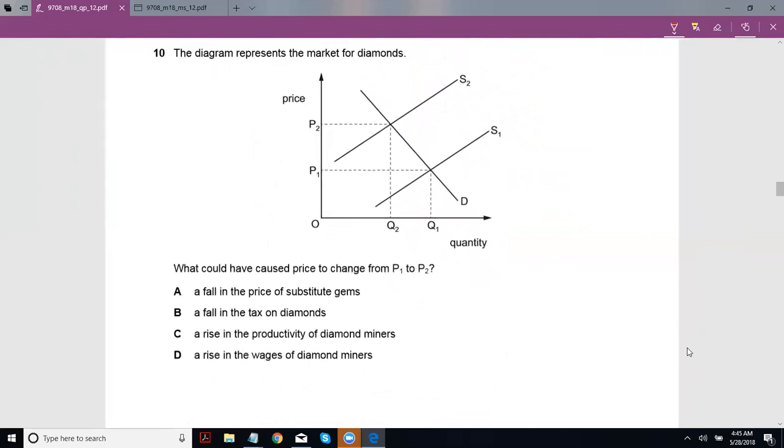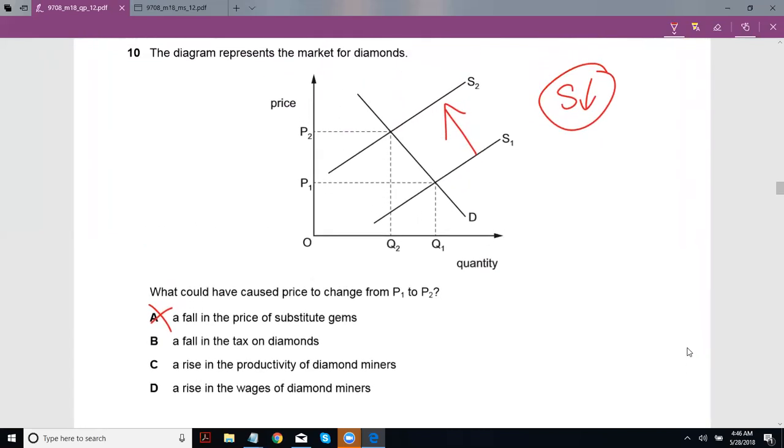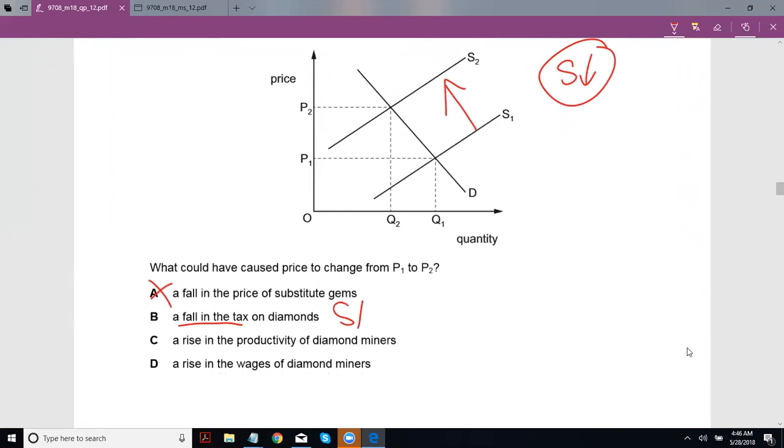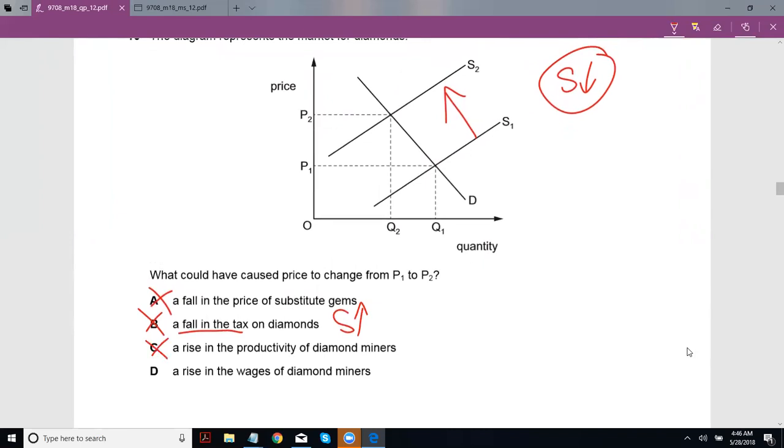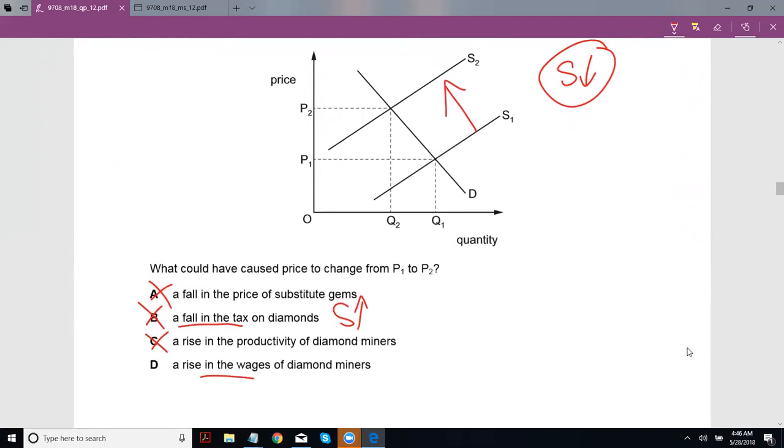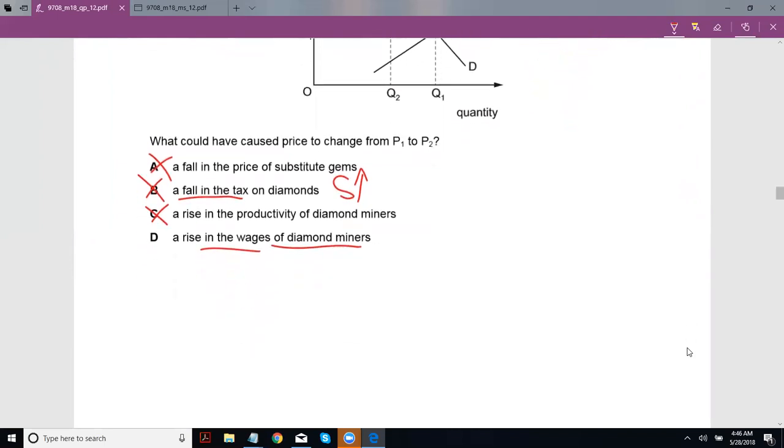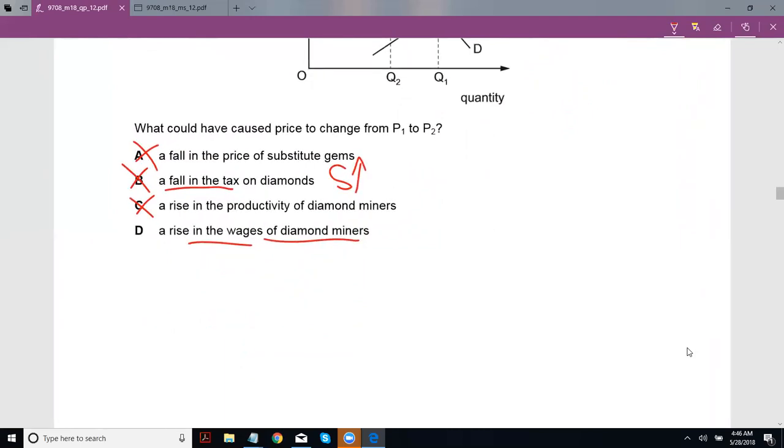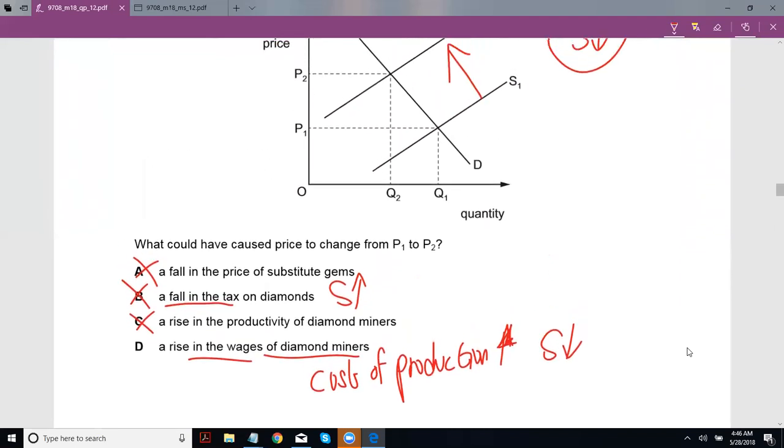Ten. The diagram represents the market for diamonds. What could have caused price change from P to P2? So they're basically asking what could have caused this decrease in supply. Remember supply decreases to the left. Supply increases to the right. Demand increases to the right. Supply decreases to the left. Demand decreases to the left. Okay. Substitutes are like demand factors. A fall in the tax. If tax has fallen, then supply should increase. That's not what's happening here. A rise in productivity. Rise in productivity should mean supply increases. That's not what's happening here. A rise in the wages of diamond miners. Again, if the price, or in this case the wage, of a factor of production goes up, then the cost of production goes up. And if your cost of production goes up, that means your supply will go down, which is exactly what's happening here. So you can go with D.